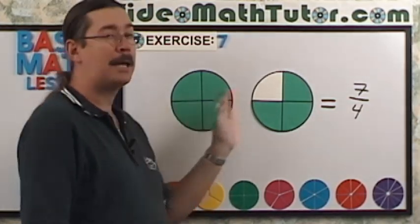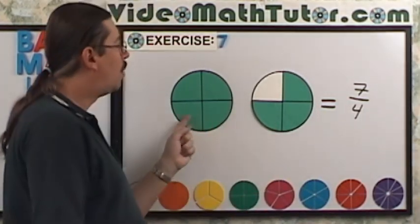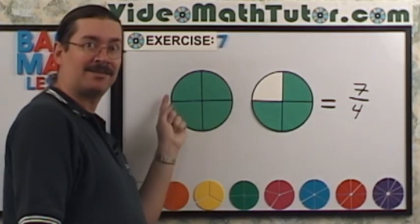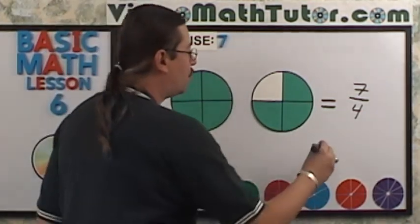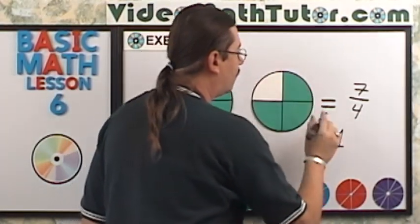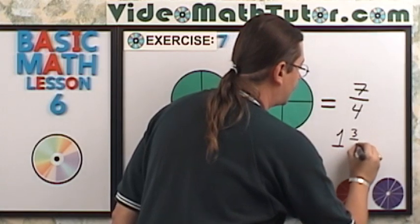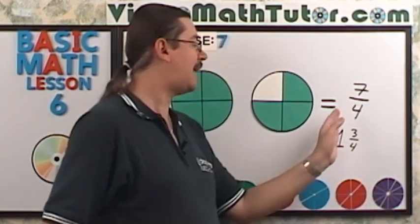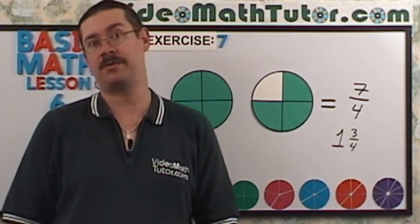Now, how would this be represented as a mixed number? Well, this is one whole figure, right? So it's going to be one. And we have one, two, three out of the four. So we have one and three fourths or three quarters.